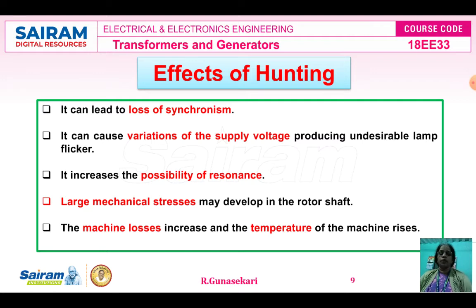The second effect is variation of the supply voltage. We use the lamp method for checking whether the supply voltage of the incoming machine is equal to that of the bus bar or another machine. Based on the lamp flickering, the operator decides if the voltage is the same. Due to undesirable lamp flicker, variation of supply voltage occurs in the synchronous generator due to the effect of hunting.